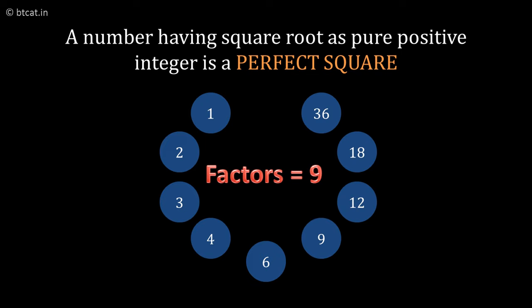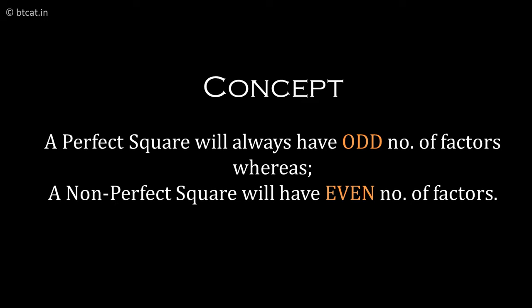All these factor counts are odd numbers. The concept is: a perfect square number will always have a total number of factors that is odd. If a number is not a perfect square, the total factors of that number will always be even.